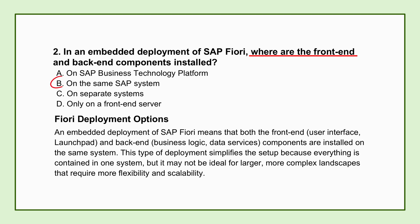But there's always a trade-off. As your system grows or you use Fiori more heavily, having the front-end and back-end sharing the same system resources can become a performance bottleneck. That's why other deployment options exist, like hub deployment, where you deliberately separate the front-end server from the back-end. That lets them scale independently and have different maintenance schedules.